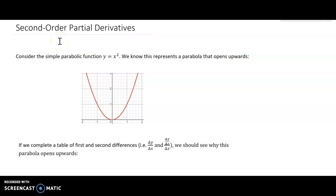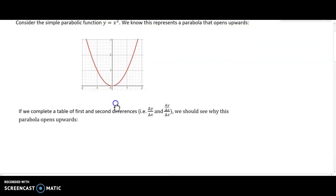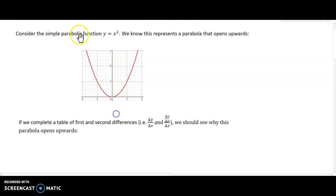Hello and welcome. In this video series we're going to take a look at second-order partial derivatives. The analogy to multivariable functions is really the same as what you experienced in your first calculus course. So let's jump back to an example from calculus one. Suppose we have the parabolic function y equals x squared, and we know that function represents a parabola that opens upwards. Here's a picture of its graph, and what we want to think about is what the second derivative is going to tell us.